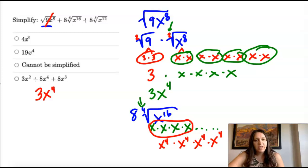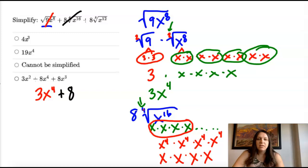Which, when I take the fourth root of that, the fours are the same, so they're canceling. And I would be left with four x's. So this one simplifies to eight x to the fourth.